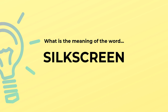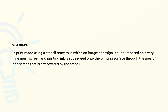What is the meaning of the word silkscreen? As a noun: a print made using a stencil process in which an image or design is superimposed on a very fine mesh screen, and printing ink is squeegeed onto the printing surface through the area of the screen that is not covered by the stencil.